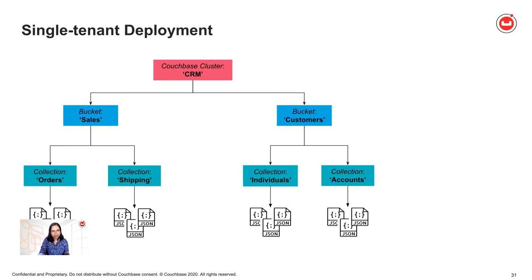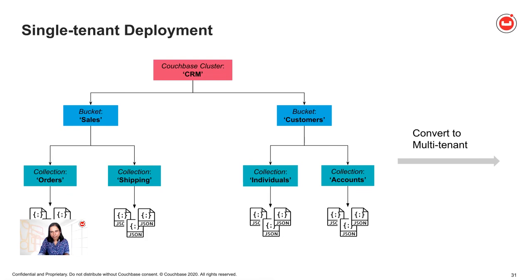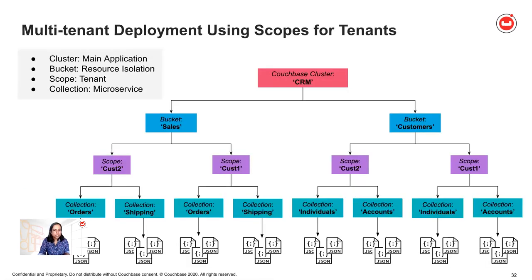Going back to our CRM application example where each collection maps to a microservice — orders, shipping, individuals, accounts — let's say I suddenly need to make this application a multi-tenant SaaS application. What I could do is simply start using scope per tenant. Now I have the same collections — orders and shipping — created for each tenant, with data completely isolated and separately secured. Each tenant's users see only their data. This way I get a combination of microservice and tenant isolation, all within the same cluster, at a scale of thousands of tenants and microservices.